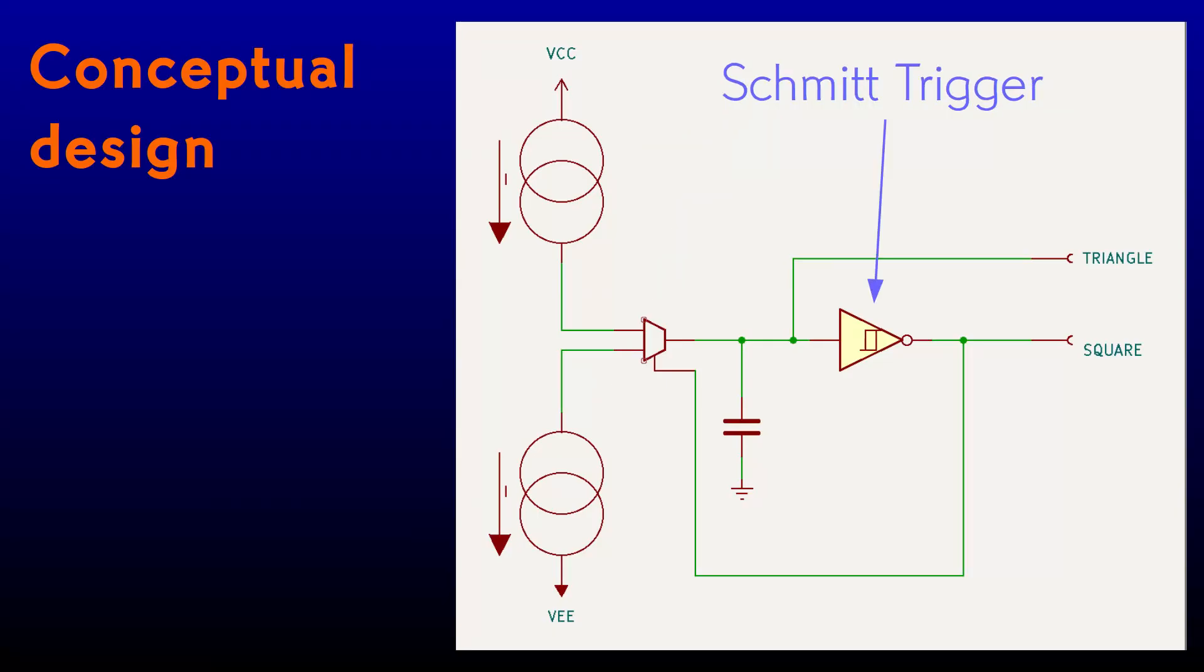As before, we'll charge and discharge a capacitor and detect the peaks of our triangle wave with a Schmitt trigger circuit. In the middle of the circuit, I'll need something called an analog multiplexer, or sometimes just an analog switch. It's a device that's controlled by a logic signal and functions just like a mechanical switch.